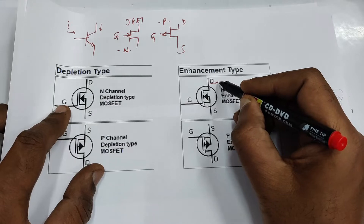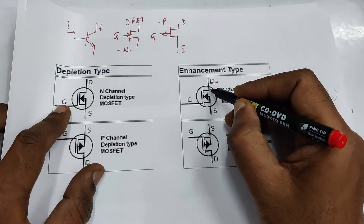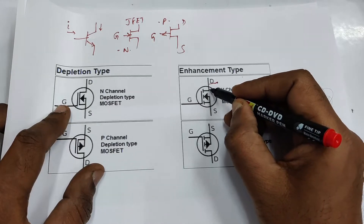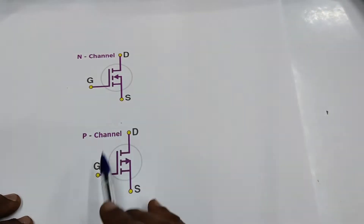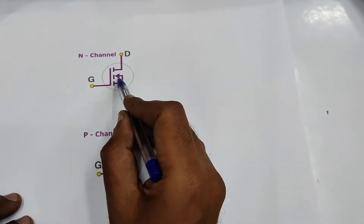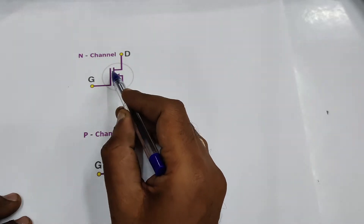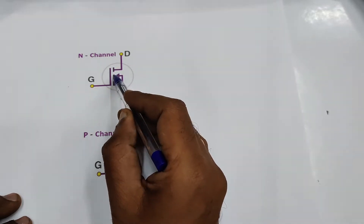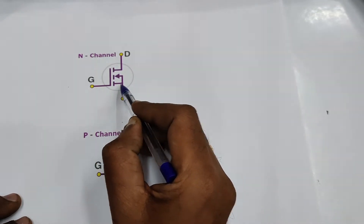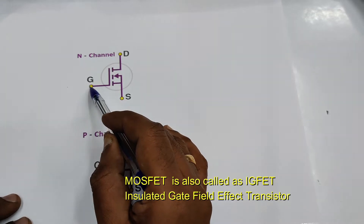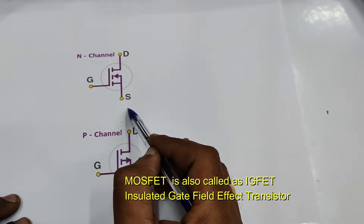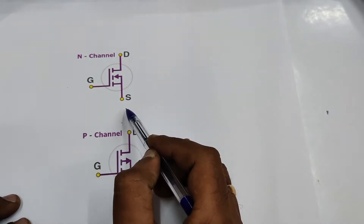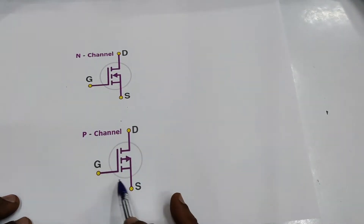There are two types of MOSFETs: N-channel and P-channel. The top one is N-channel and the bottom is P-channel. The broken line in between indicates it is enhancement type — there is no channel between source and drain, it is formed only when there is a gate voltage. Since the gate is insulated, it is also called insulated gate FET.